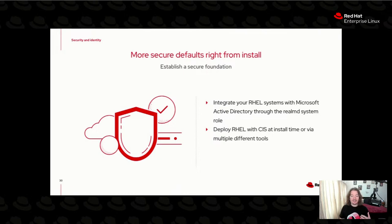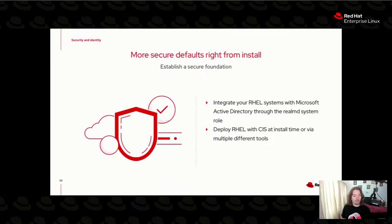We also now have the ability to use a system role to register your systems with Microsoft Active Directory. If you're running in Azure or in a Windows-heavy environment, you can register your RHEL systems with Microsoft Active Directory using nothing but a system role. System roles are basically very small, customizable Ansible playbooks that manage a specific service — whether it's SSH, the kernel, Web Console, or now Microsoft Active Directory Realm D authentication.